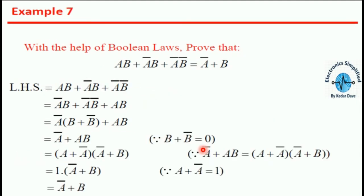Taking one more example — the seventh — we prove ā + b using Boolean laws. We use the property b + b̄ = 0 and show that ā + ab = a + ā into ā + b. We just do the multiplications using the laws discussed in previous videos. Many kinds of equations can be derived from these laws.